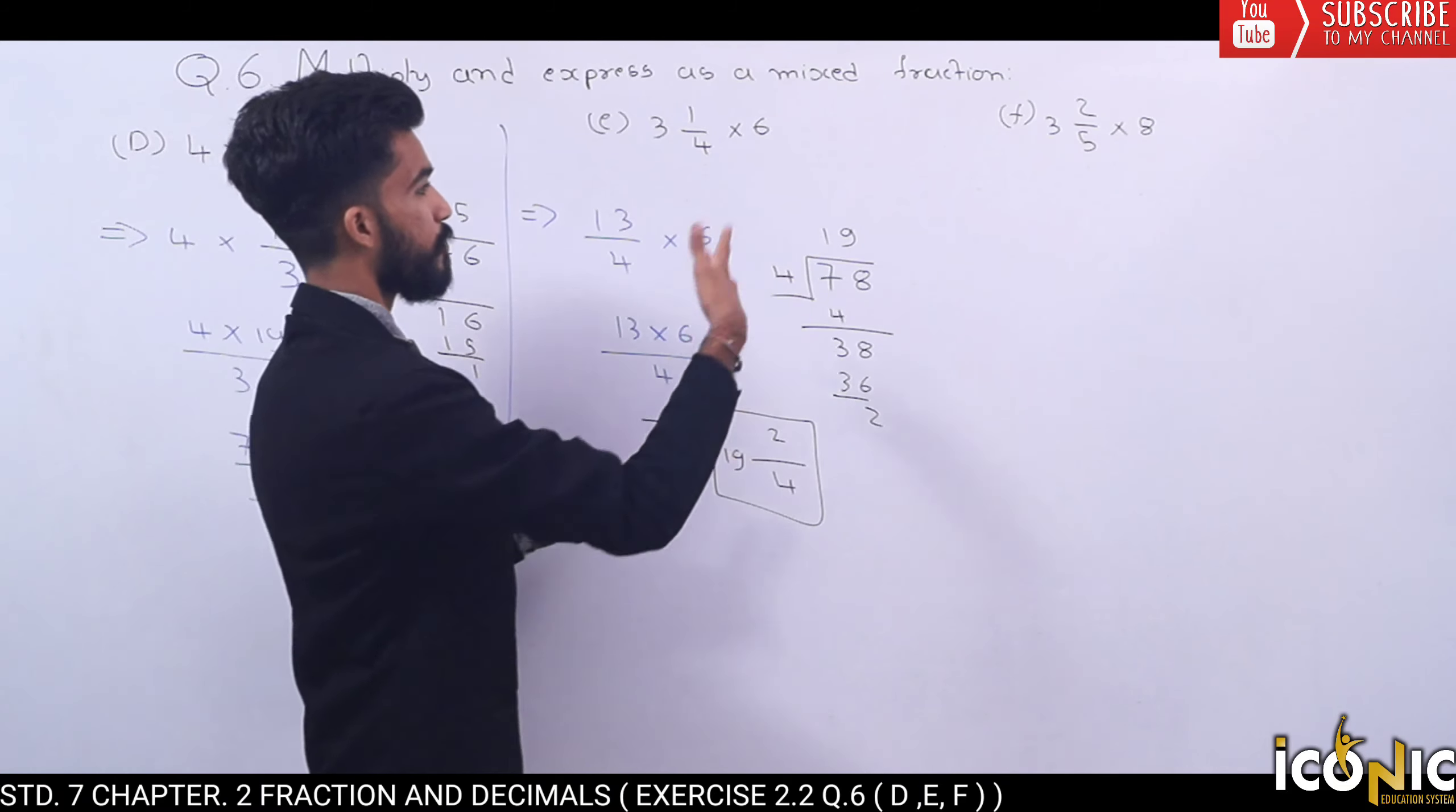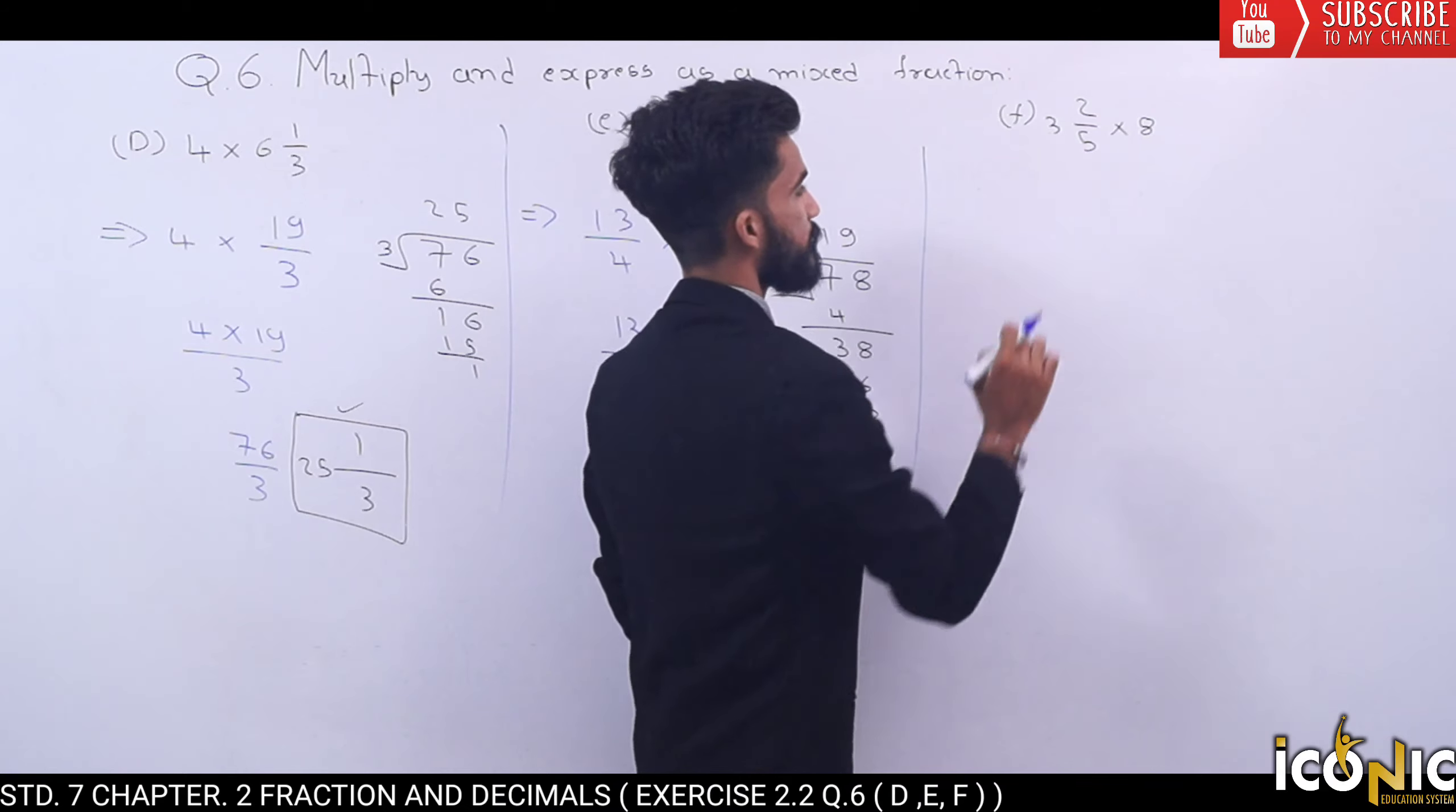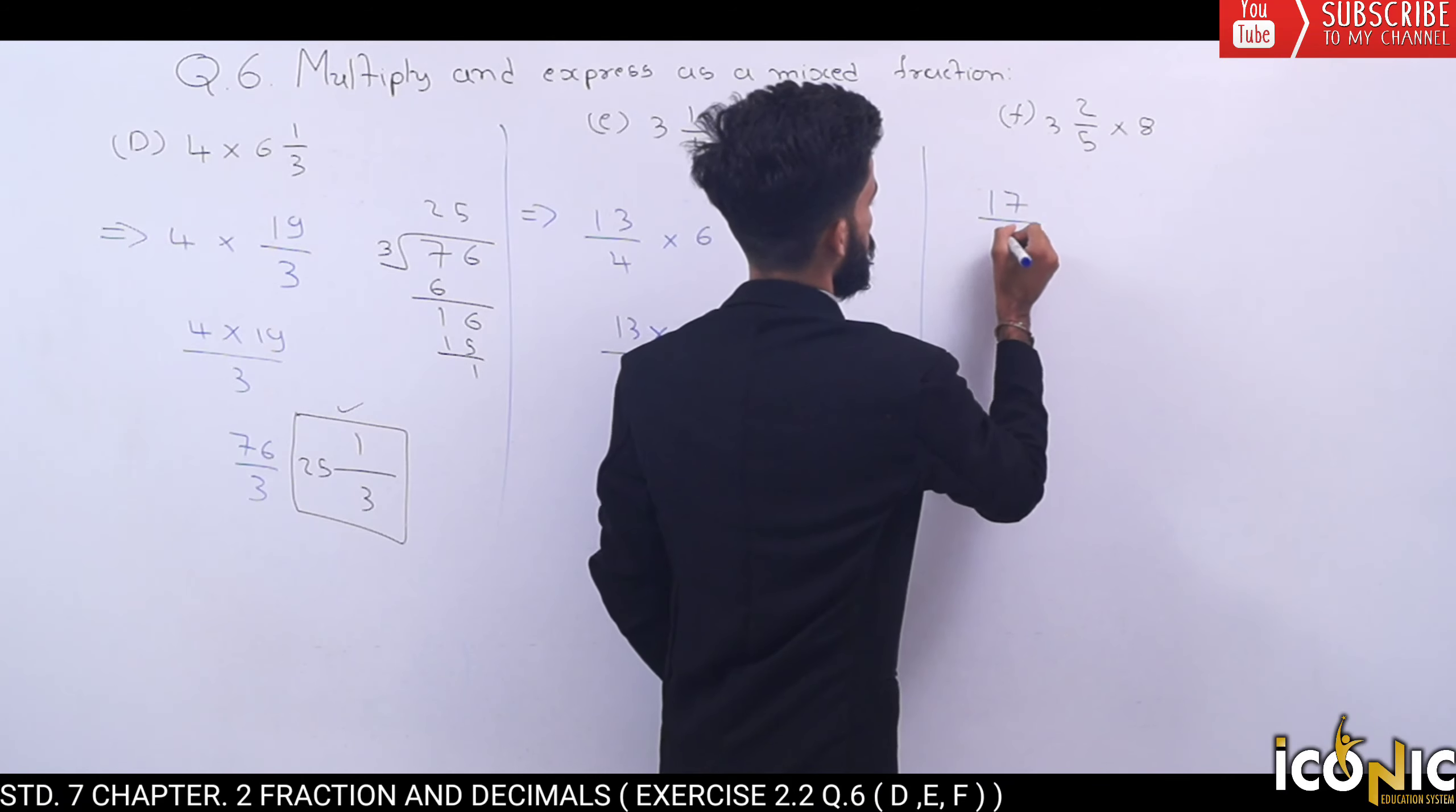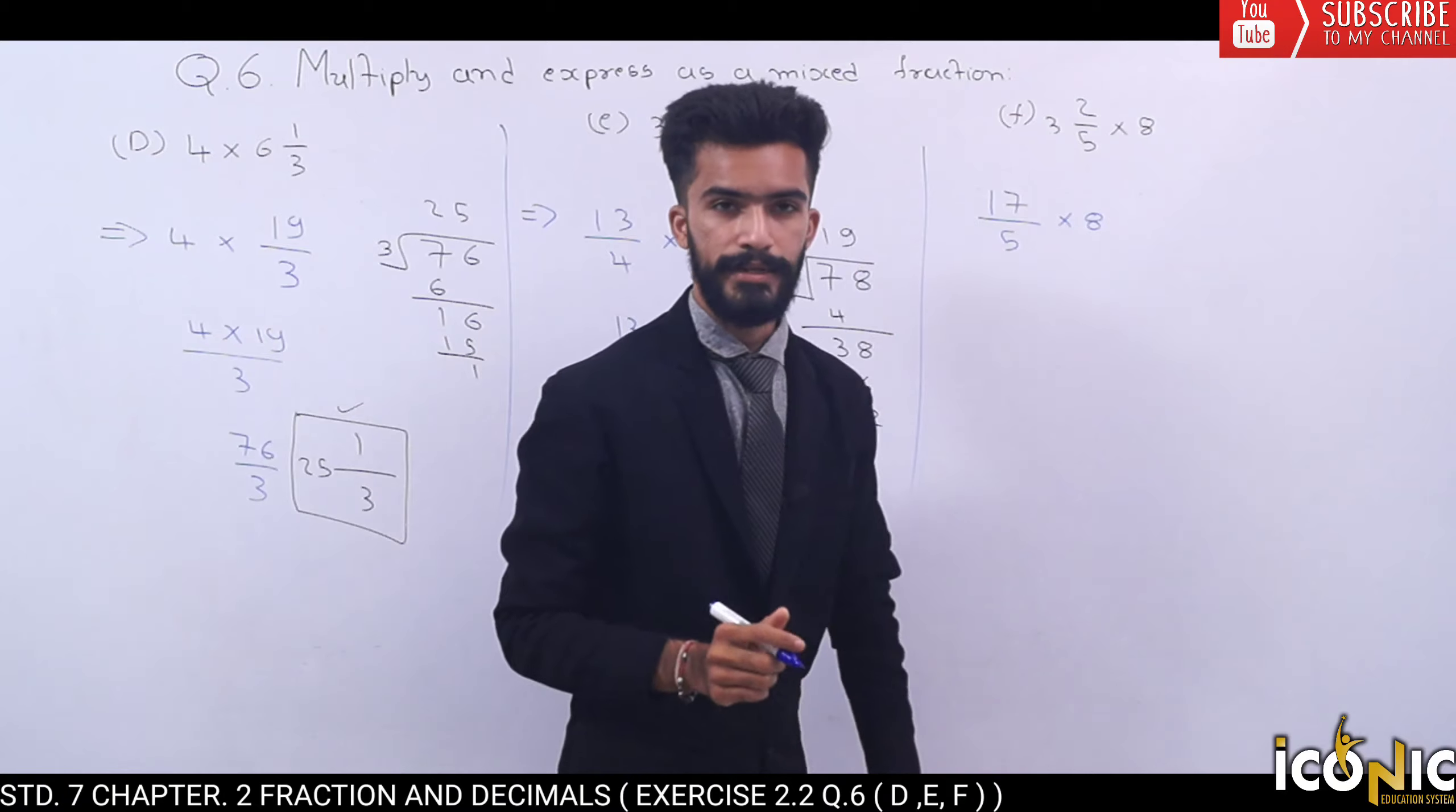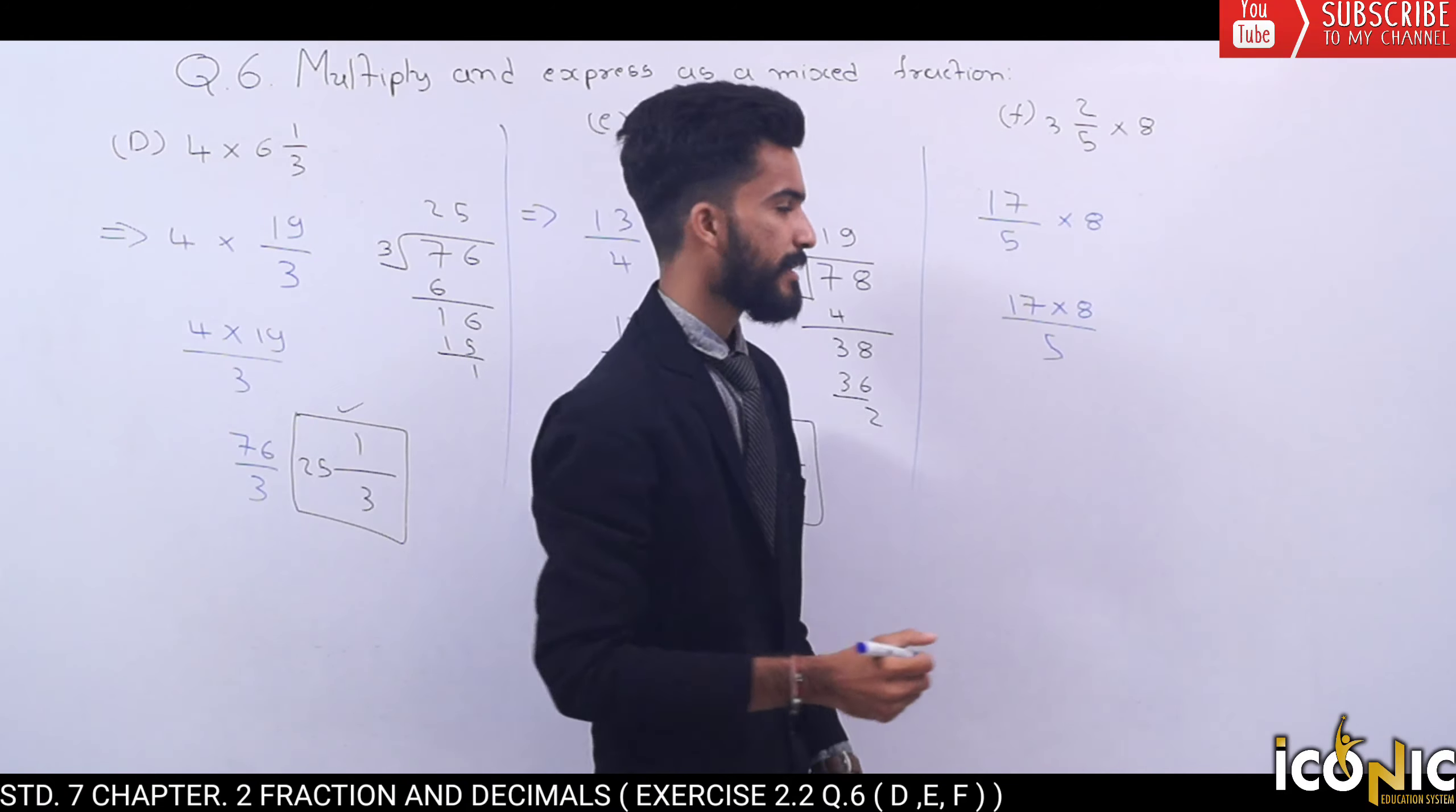Let's go to F. First we have to convert to normal fraction. 5⅖ means 5 times 3 is 15 plus 2 equals 17. 17 upon 5 multiply by 8. We'll do 17 multiply by 8 upon 5. 17 times 8...